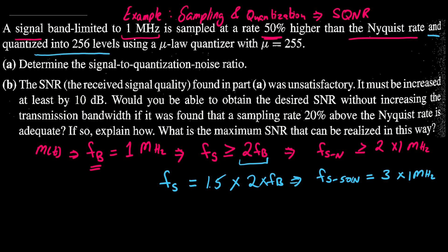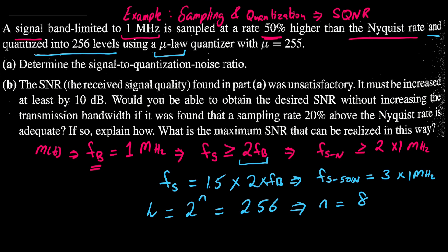Next we have 256 quantization levels. The quantization level L equals 2^n where n is the number of bits, so L = 256 indicates that n = 8. This is an 8-bit quantizer. Finally, we are using mu-law with μ = 255.